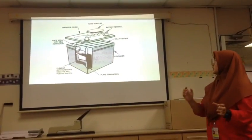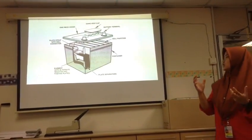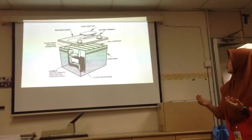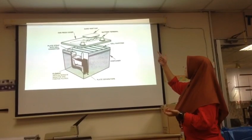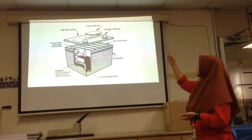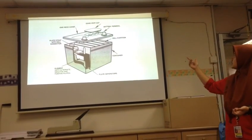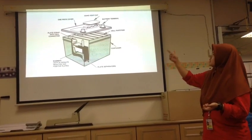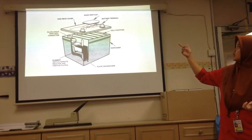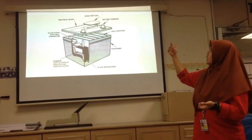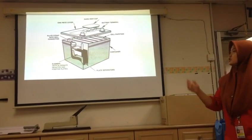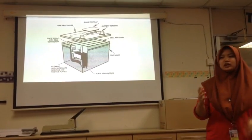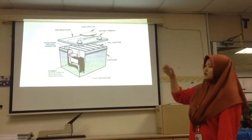The car battery has: dam van cap, battery terminal, cell partition, container, plate and space separators, plate step, three cell connectors, and one piece cover. This is a normal car battery that we can have. Everyone can have this.